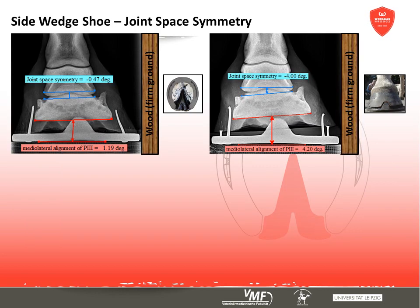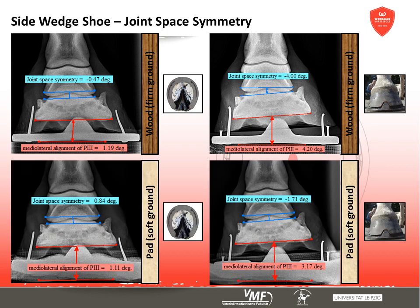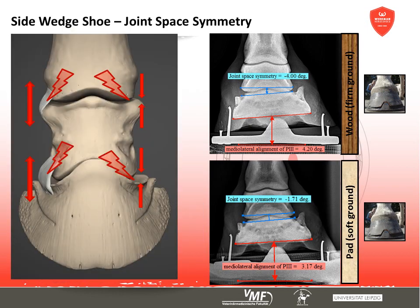There is also a significant and reproducible effect on joint space symmetry according to the coffin bone's altered position. On firm ground we see a substantially narrower joint space on the wedged side whilst the contralateral side opens up. On soft ground the effect on joint spaces is minimal. Nevertheless, the influence on joint space symmetry leads to considerable stress on the articulating joint surfaces on the elevated side and distension of the lateral ligaments on the contralateral side. When using this shoe for therapeutic purposes, these side effects must be considered.